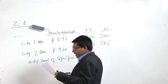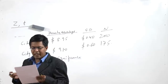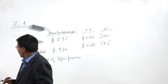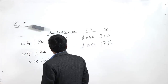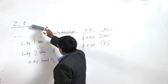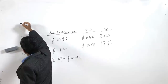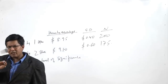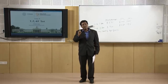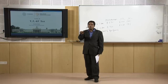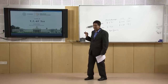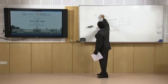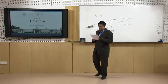The company wants to test at a 5% level of significance whether the mean earnings of the two cities are different or not. The null hypothesis is that there is no difference — the hourly wages of both cities are actually the same and whatever difference has come is only by chance, not a statistical difference. So: mu1 equals mu2, there is no significant difference.